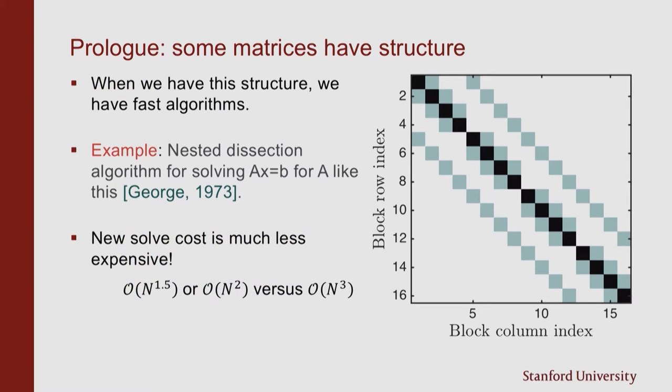And what's important about having this sort of structure, as probably many of you know, is that when you have structure you have fast algorithms. You can do better than order n cubed. So the canonical example for this sort of problem would be the nested dissection or the multi-frontal method. It's been around since the 70s and this lets you solve things really quickly when you have this sort of grid structure on a sparse matrix. So in particular, normally it would cost you order n cubed. You can get something like order n squared or even order n to the 1.5 using nested dissection in 2D for a problem of this type.